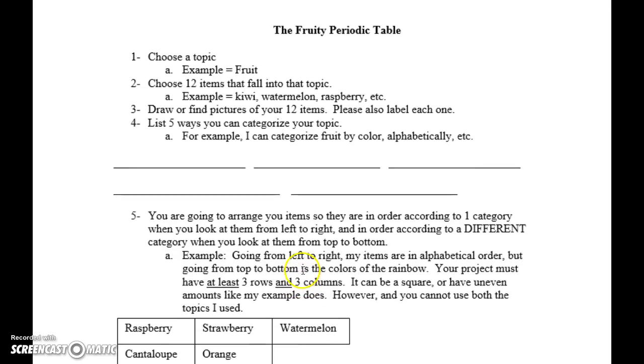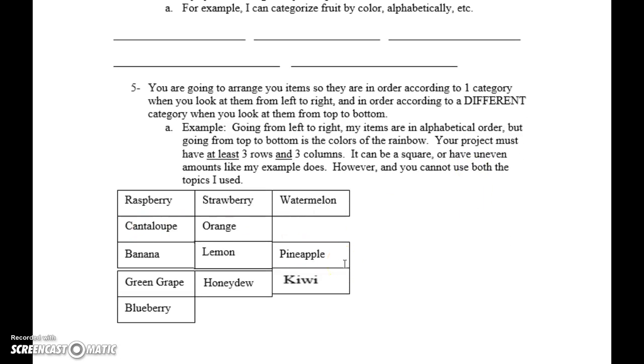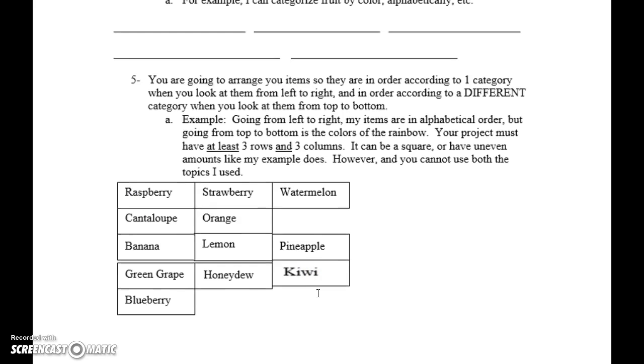Now, the reason I told you to come up with five topics, sometimes you just can't get it to work with only your first two choices. So, maybe if you're working on it, and you're like, I give up. Okay, try a different category to arrange everything. So, it might be really easy, it might take you a few minutes to figure this out.